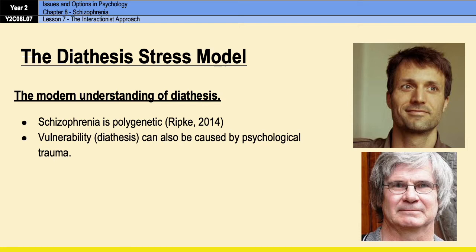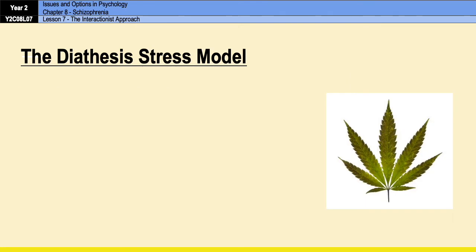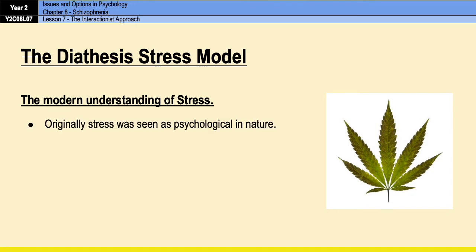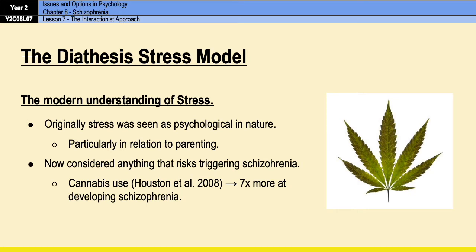One theory has proposed that early childhood trauma such as child abuse can actually alter the developing brain — for example by making our HPA system, which is our inbuilt chronic stress response, overactive, making a person more vulnerable to stress in later life. Equally, our concept of a stressor has also evolved. In the original model stress was seen as entirely psychological, particularly in relation to parenting. Modern definitions of stress in relation to the diathesis-stress model include anything that risks triggering schizophrenia. For example, cannabis has been found to be a stressor, increasing the risk of developing schizophrenia by up to seven percent depending on dose and usage.